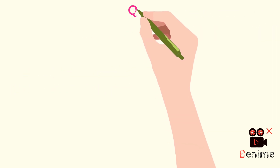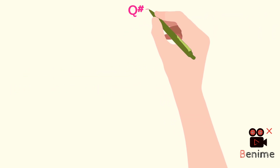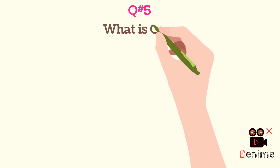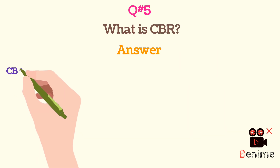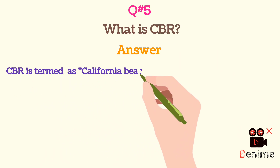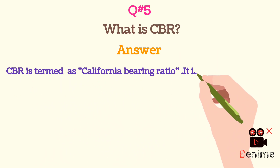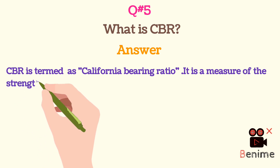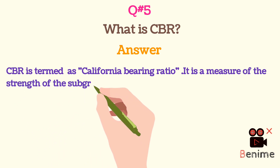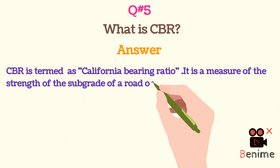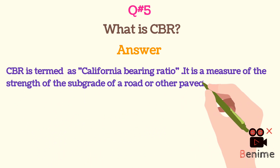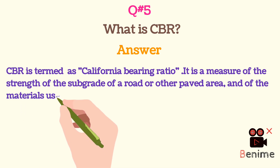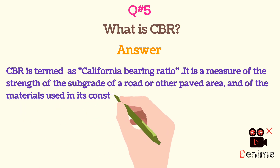Question 5: What is CBR? CBR is termed as California Bearing Ratio. It is a measure of the strength of the subgrade of a road or other paved area, and of the materials used in its construction.